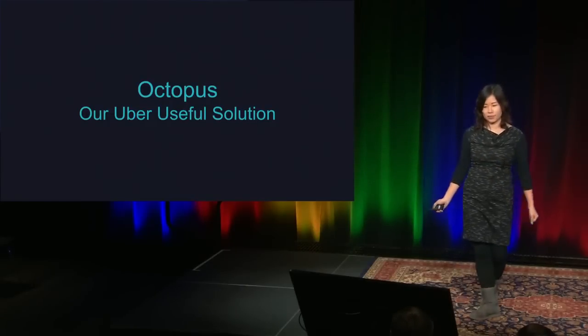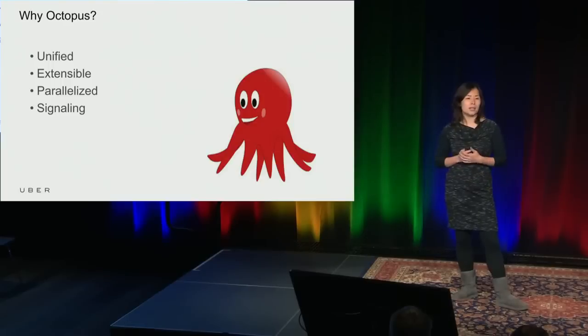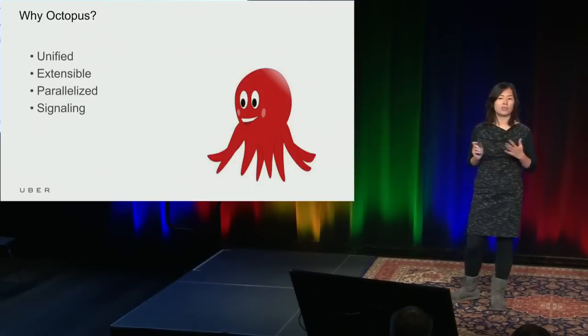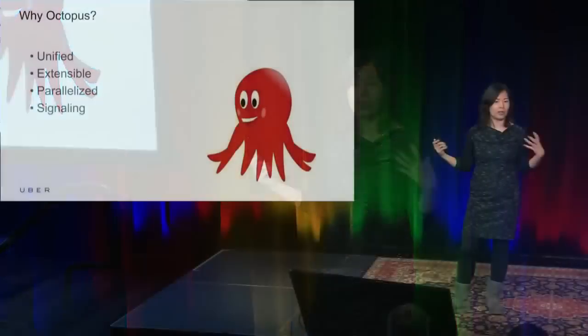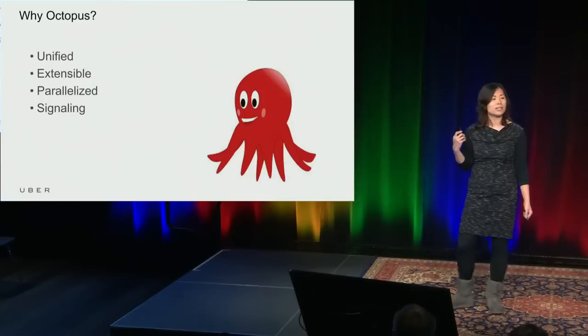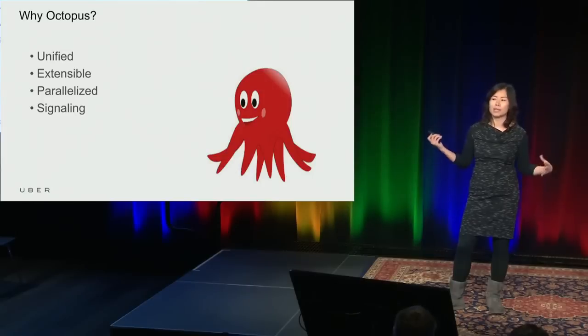So let's talk more about Octopus. What were all the reasons behind why we built it? First, we wanted a unified test runner for both our Android and iOS apps. Second, we wanted extensibility so our runner can be integrated with different UI testing frameworks. Third, we wanted to support parallelized runs to speed up our tests. And lastly, we want to support signaling so tests can communicate with one another even though they are running across device and across apps. Most of our talk will focus on the signaling functionality since that's what enables cross-app and cross-device communication.